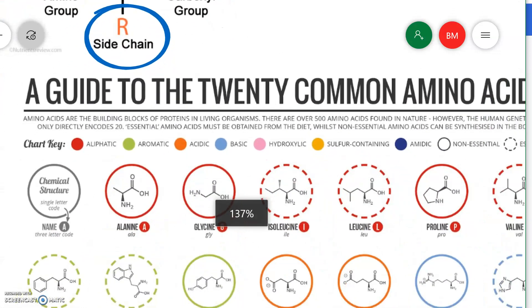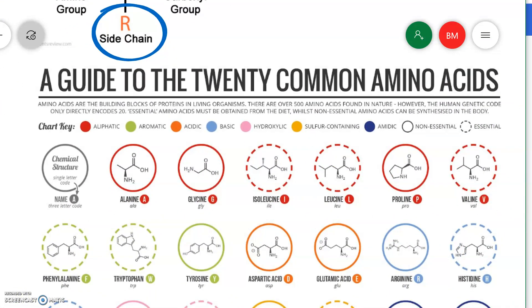So there are 20 common amino acids found in proteins. We're going to eventually come back and focus in on this one, cysteine.